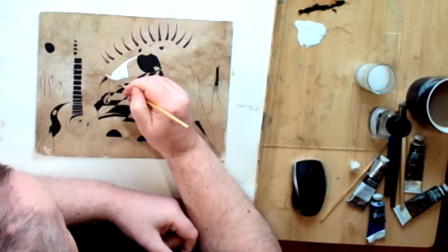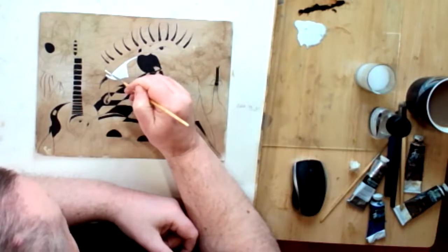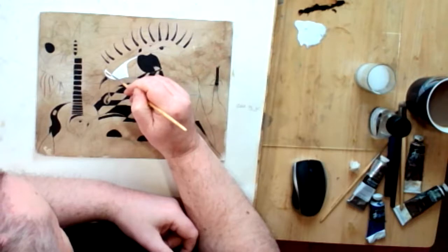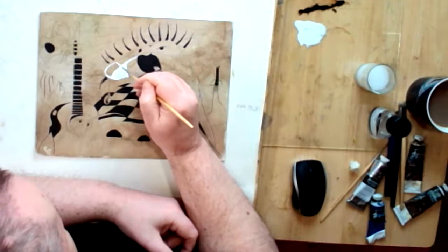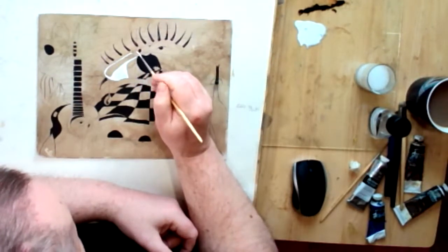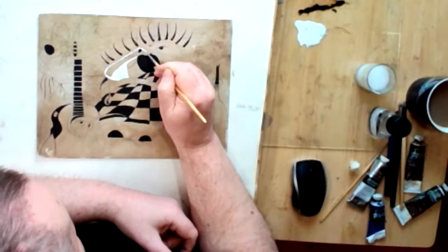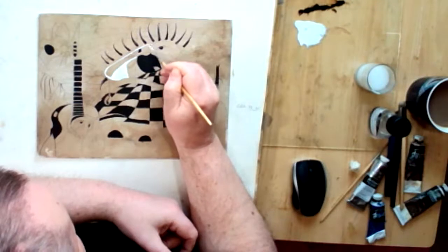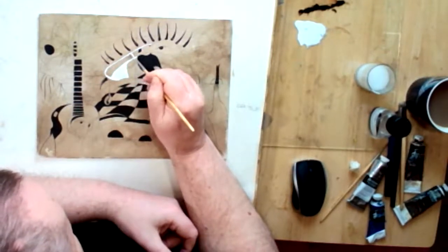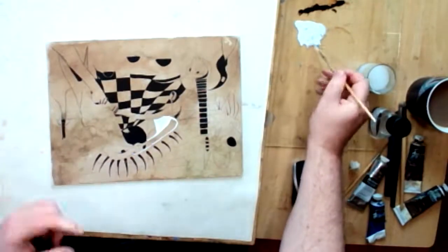There was a mistake there that I need to correct. Titanium white is famously opaque, so it can be used like a sort of tipex to correct areas. I'm going across the iris. That's okay because I'm going to overpaint this.